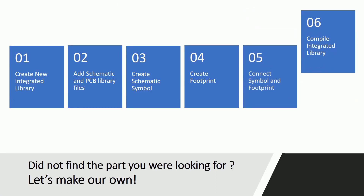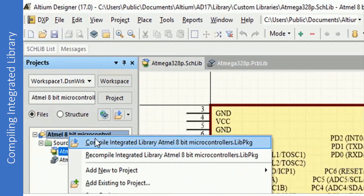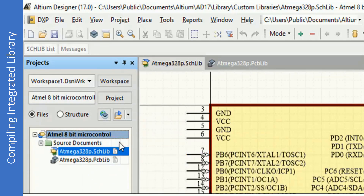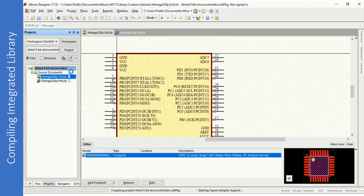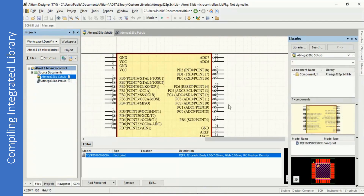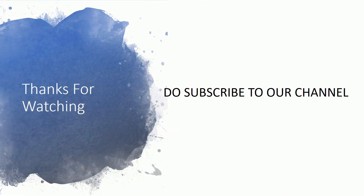This is the final step for creating the integrated library: compiling it. Whenever you make any changes to this library, remember to recompile it. To compile, just right-click on the integrated library and select Compile Integrated Library. Once done, the system will compile the library and show the library panel. This completes the procedure for creating integrated libraries — that is everything about Altium libraries. I hope you liked the video. Do subscribe to our channel if you liked it. Thanks for watching.